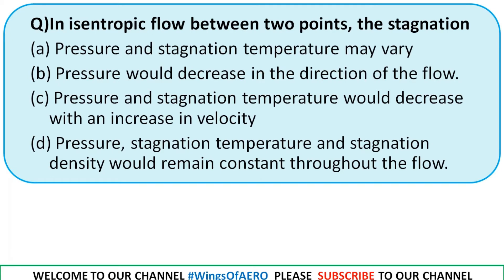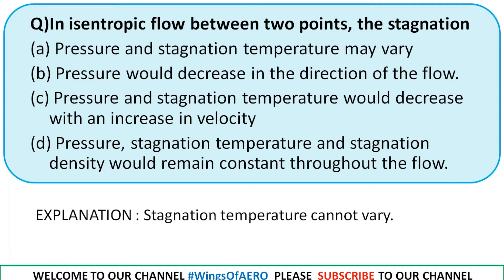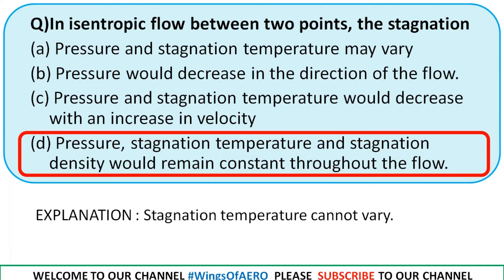In isentropic flow between two points — options state that stagnation pressure and stagnation temperature may vary, or pressure decreases in the direction of flow, or pressure and stagnation temperature decrease with velocity, or stagnation pressure, temperature, and density remain constant. Remember: in isentropic flow the stagnation temperature and stagnation entropy cannot vary. So the right option is option D.